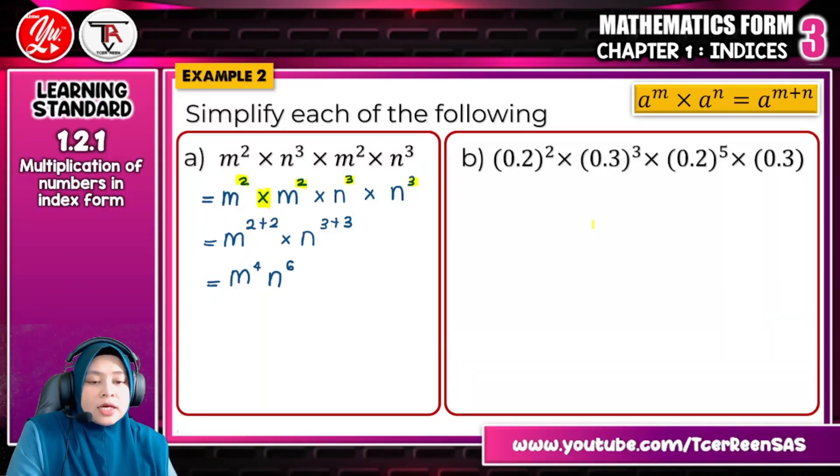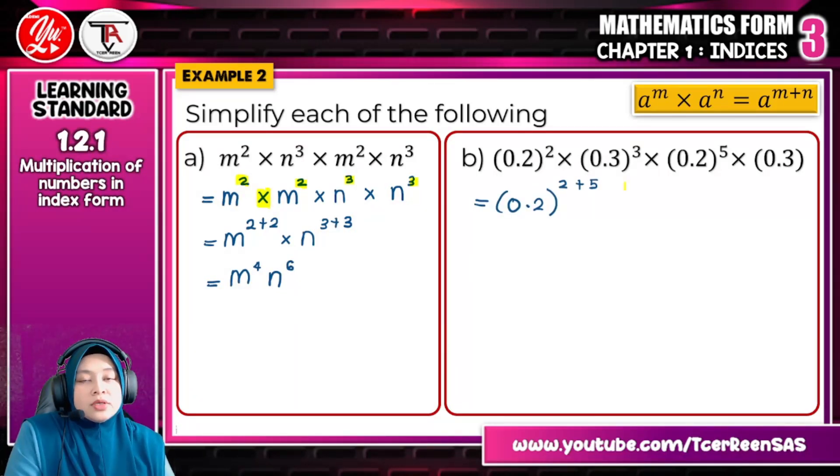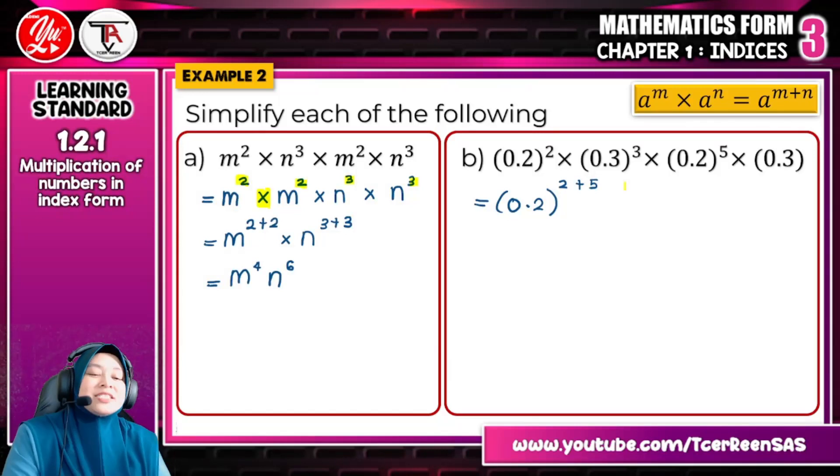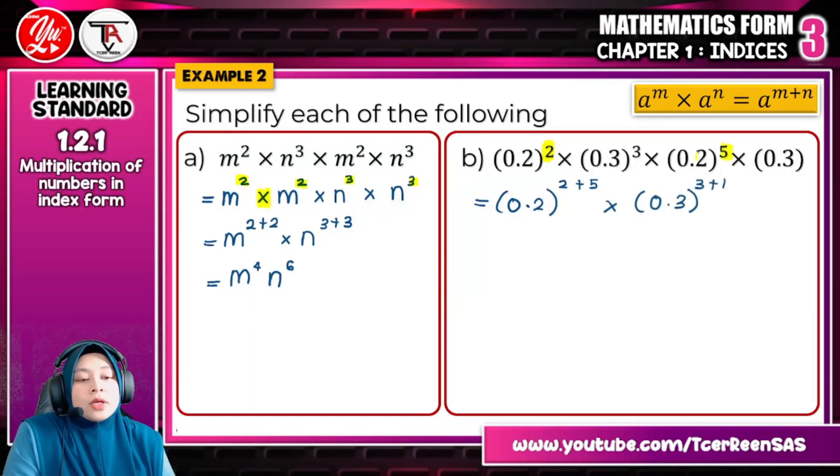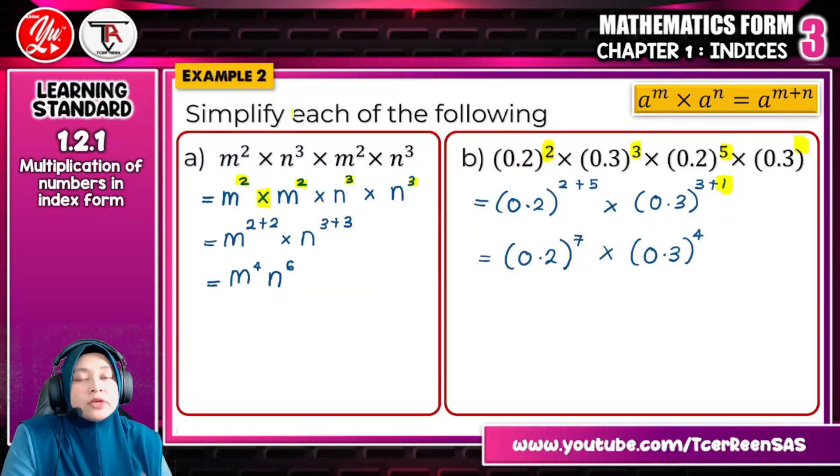For B, how many bases here? Got 2, right? 0.2 and 0.3. So for a beginner you can arrange it first. But if you are getting more fast after this, you just need to write the first base here, 0.2, and combine the indices for this base which is 2 plus 5. You find the 0.2 only, combine. Then for 0.3, 3 plus, this one has no index. Remember, bila tak ada bermaksud satu. So the final answer is 0.2 to the power of 7 and 0.3 to the power of 4. Because the question is simplified, no need to find the value.